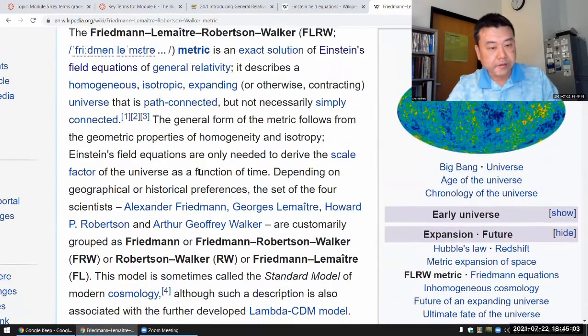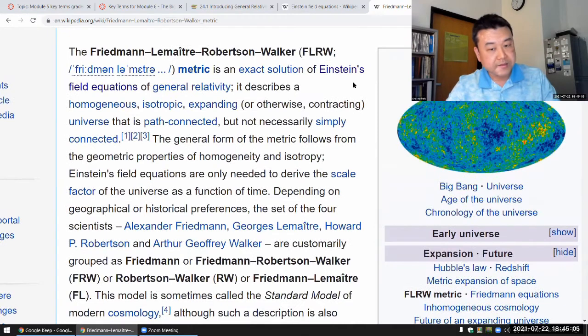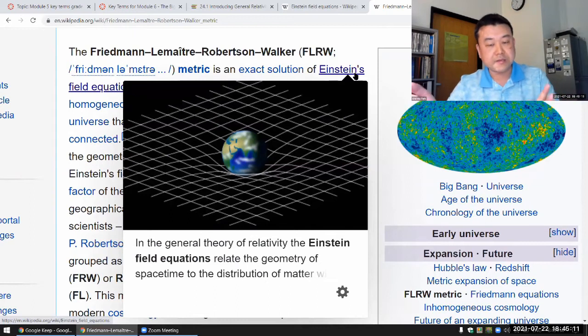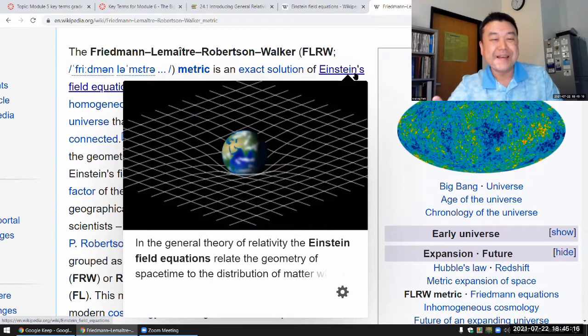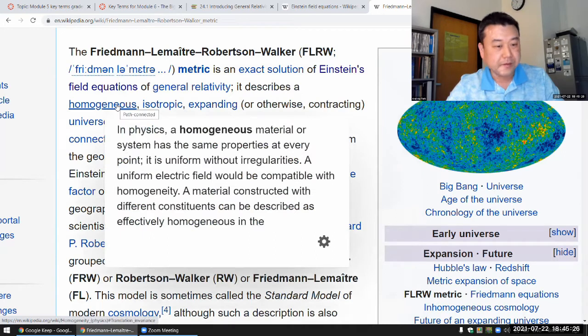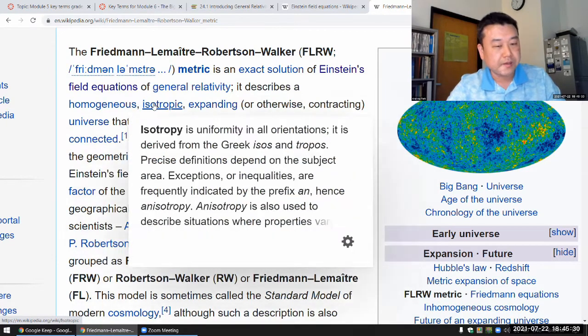So you can kind of connect the dots here this way. You have Einstein's field equations expressing general relativity. That's your starting place. Einstein discovered this new property of space and time in the presence of mass and gravity. And you have some simplifying assumptions that we think is largely true in something that applies to homogeneous and isotropic initial conditions.